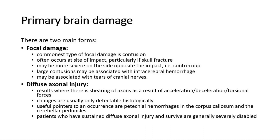The commonest type of focal damage is contusion. It often occurs at the site of impact, particularly if there is a skull fracture. It may be more severe on the side opposite the impact, such as contrecoup. Large contusions may be associated with intracerebral hemorrhage, and may be associated with tears of cranial nerves.